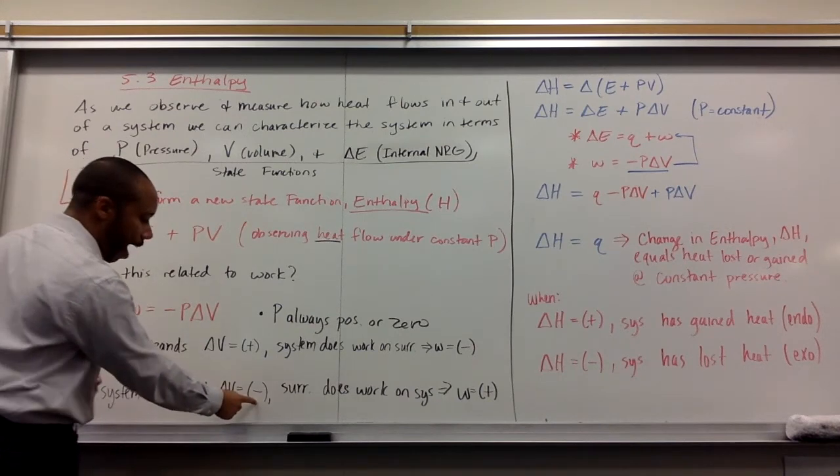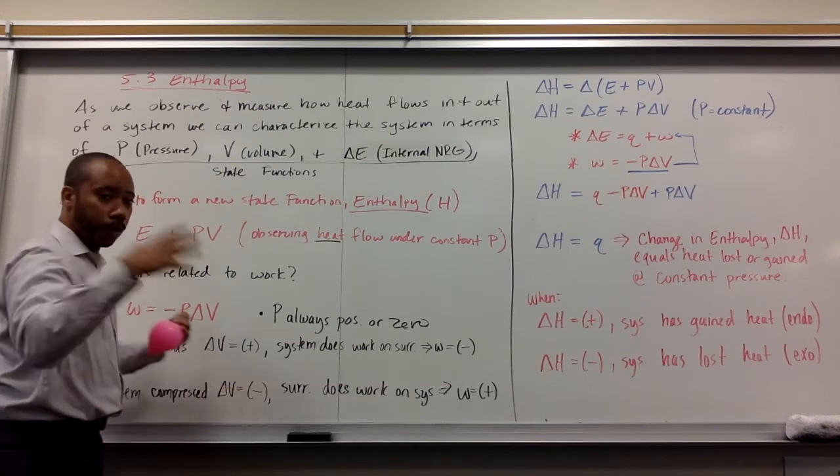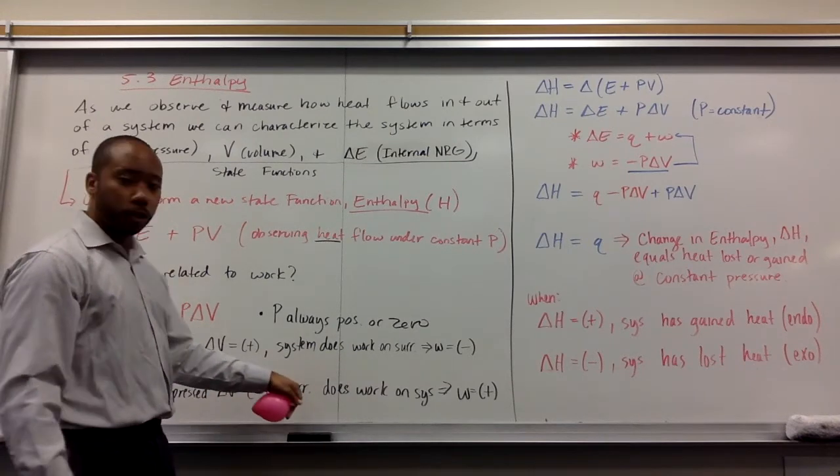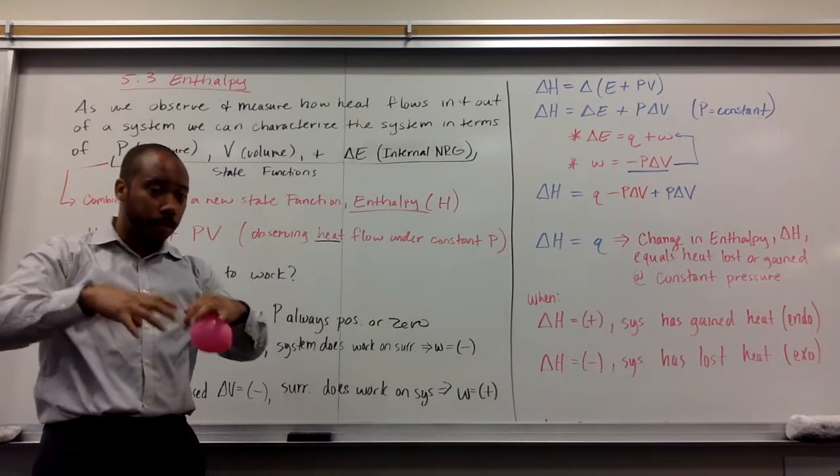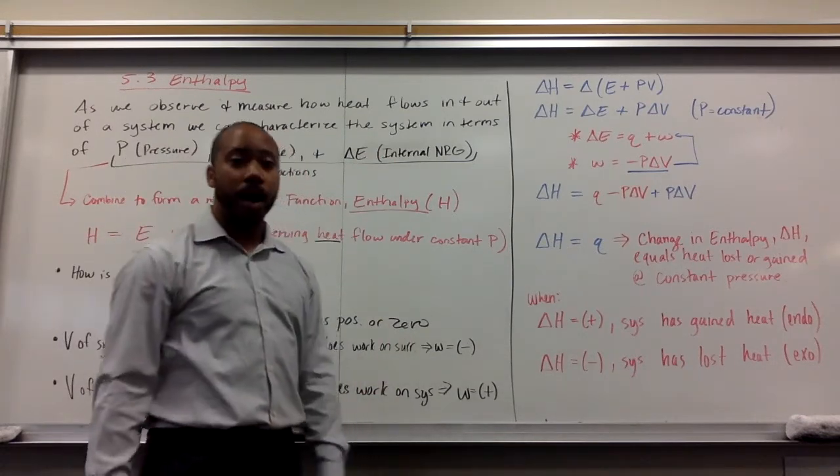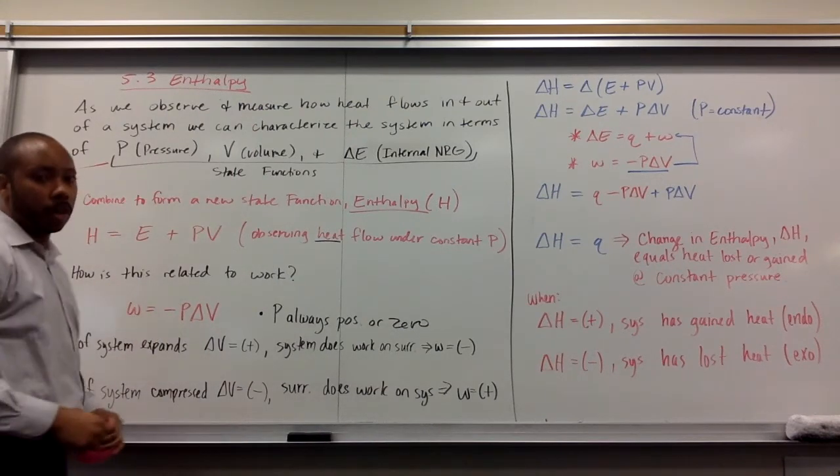So your volume has decreased. If your delta v is negative or if it decreases, that means your surrounding does work on the system. If the surrounding does work on the system, then your work value is positive. And that's given by a negative delta v, negative times negative gives you a positive w.